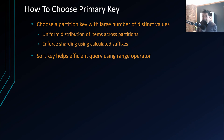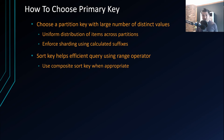The sort key helps efficient querying using range operators — greater than, less than, between, begins with. Use a composite sort key when appropriate. The sort key sorts items within the same partition for the same partition key, making it easier to retrieve them since they are stored next to each other.